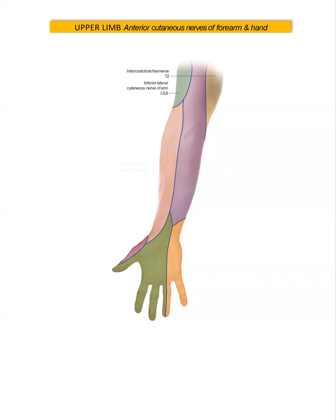We also have the lateral cutaneous nerve of the forearm, which is the continuation of the musculocutaneous nerve, which is itself a continuation of the lateral cord of the brachial plexus. We also have the medial cutaneous nerve of the forearm, which is a branch from the medial cord of the brachial plexus.